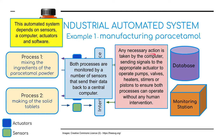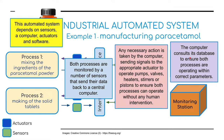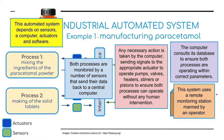Any necessary action is taken by the computer, sending signals to appropriate actuators such as operation pumps, valves, heaters, stirrers, and pistons, to ensure both processes can operate without any human intervention. The computer consults its database to ensure both processes are operating within correct parameters. Finally, this system uses a remote monitoring station manned by an operator to make sure everything's okay — an overall final check.